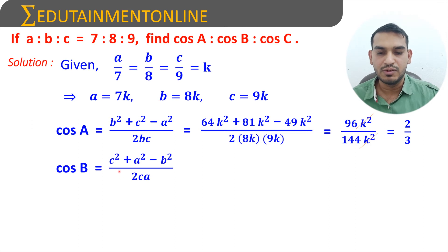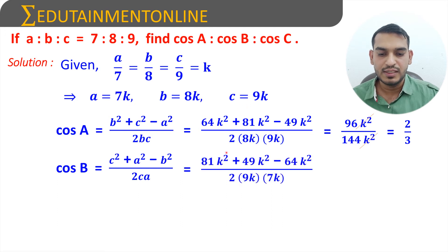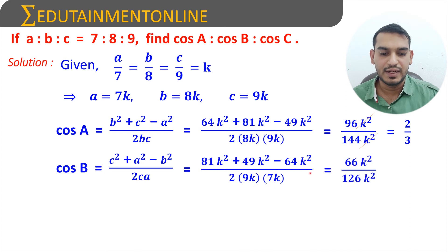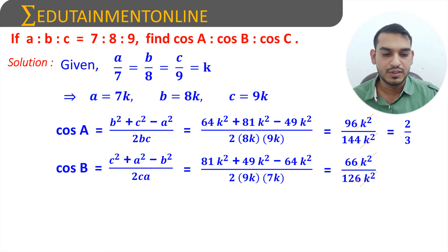Similarly, cos B = (C² + A² − B²) / 2AC. Substituting: C² = 81k², A² = 49k², minus B² = 64k², divided by 2 × 9k × 7k. Resolving: 81 + 49 − 64 = 66k² divided by 2 × 9 × 7 = 126k², giving 66/126 = 11/21.